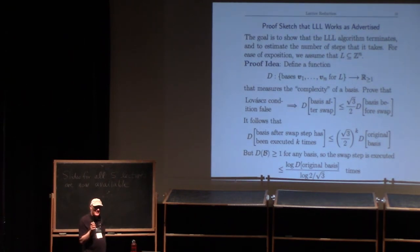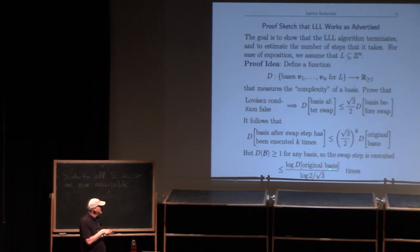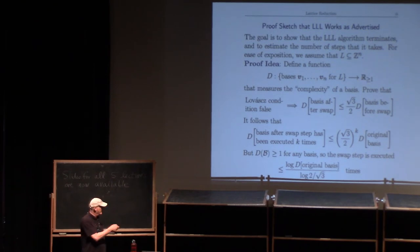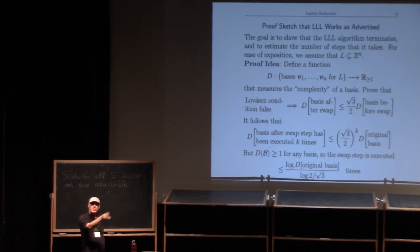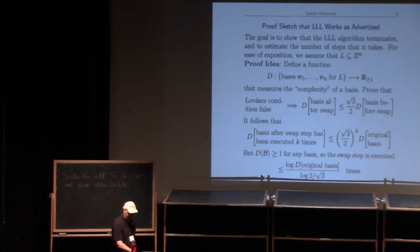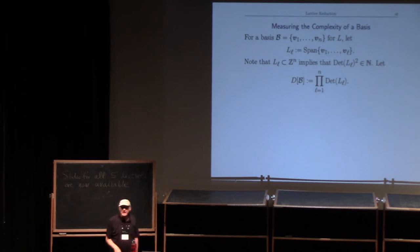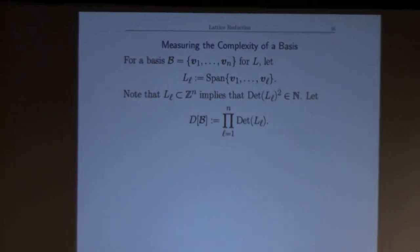Since the complexity is always ≥ 1, the number of swap steps is bounded by log of the initial complexity divided by log(2/√3). The complexity of the original basis as a function of dimension n looks like a constant to the n², so when you take the log, the number of swap steps is roughly n².